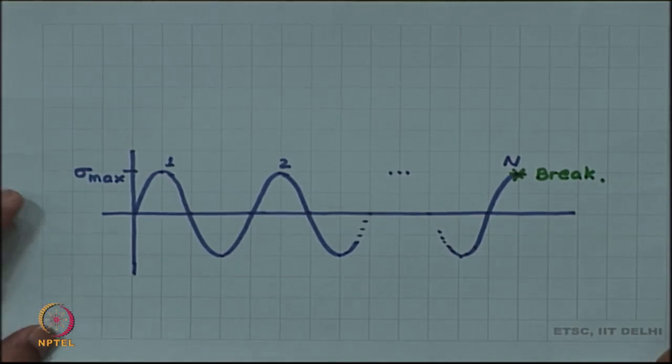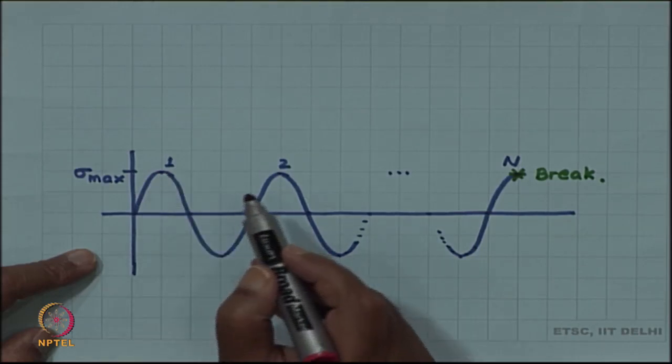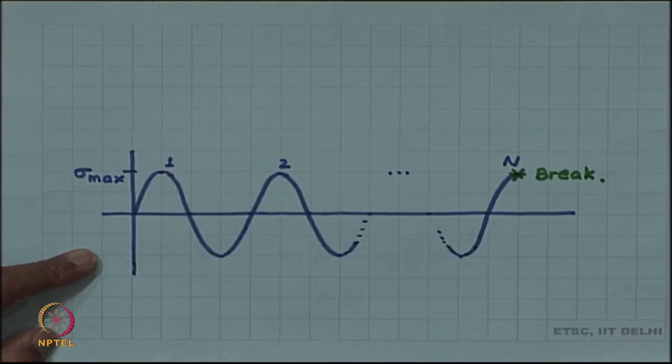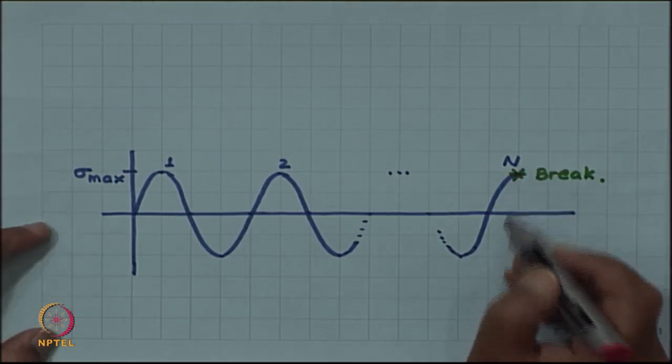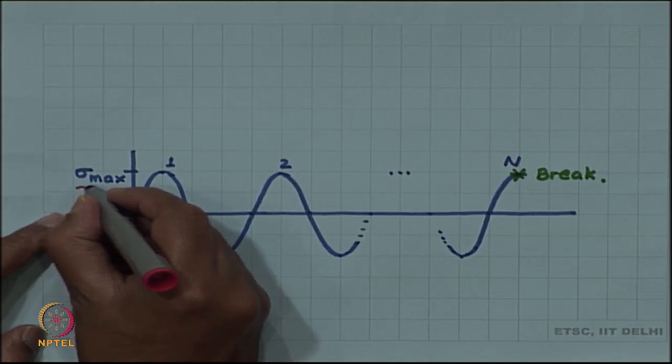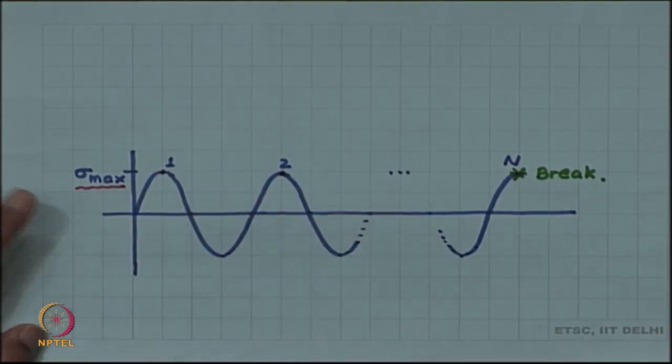Now, the question is: when the component did not break in the first cycle or the second cycle, why does the same component break in the nth cycle, when the maximum stress is the same as in the first cycle or second cycle?